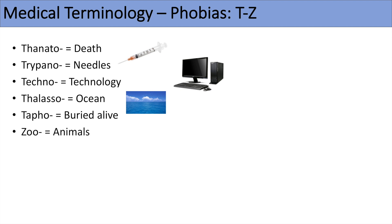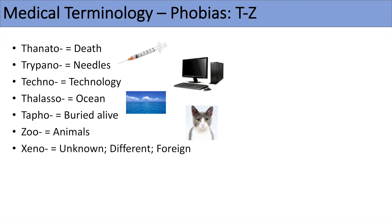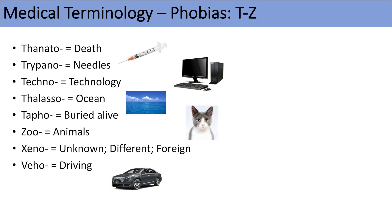The next prefix is zoo, which refers to animals, so zoophobia is a fear of animals. Xeno refers to something unknown, different, foreign, or alien. So xenophobia would be a fear of the unknown or fear of something foreign. The next prefix is viho, which refers to driving. So vihophobia would be a fear of or aversion to driving. You can think of the word vehicle when you think of viho.